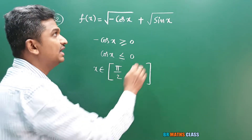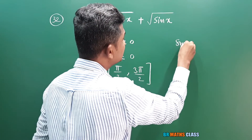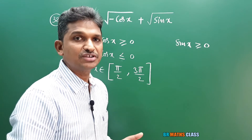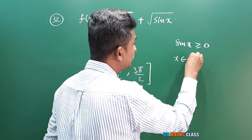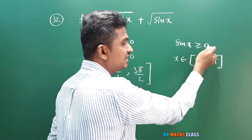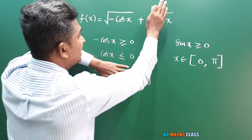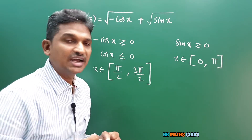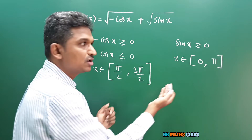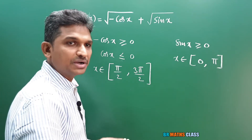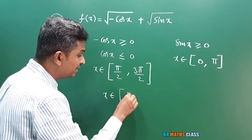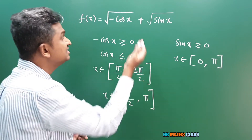Now for the second function under the square root, sin x ≥ 0 means sin x is positive, which occurs in the first and second quadrants. So x belongs to the closed interval [0, π] — closed because sin 0 = 0 and sin π = 0. To find the domain of the full function, I take the intersection of [π/2, 3π/2] and [0, π]. The second quadrant [π/2, π] is common to both, so the domain is the closed interval [π/2, π].